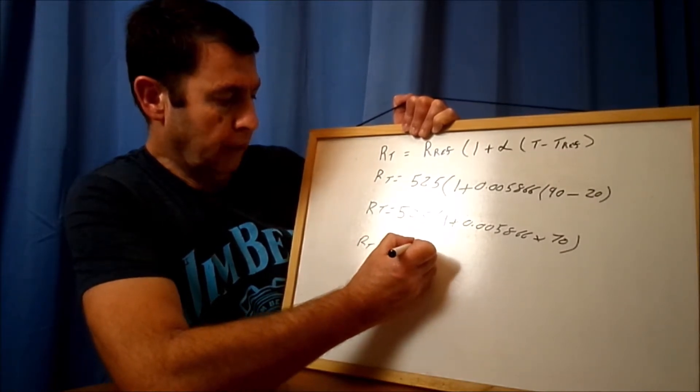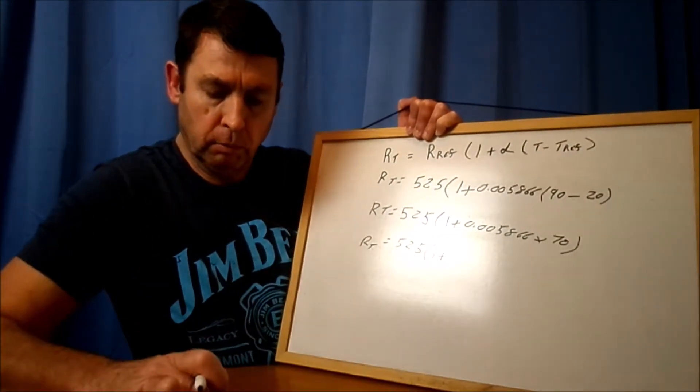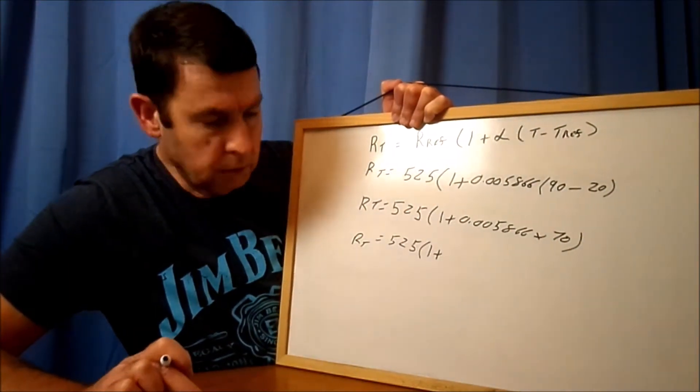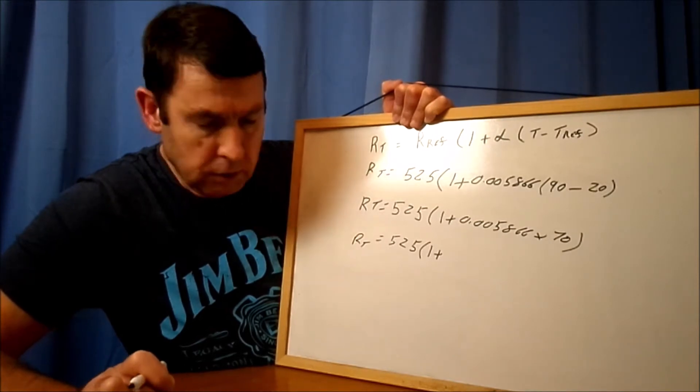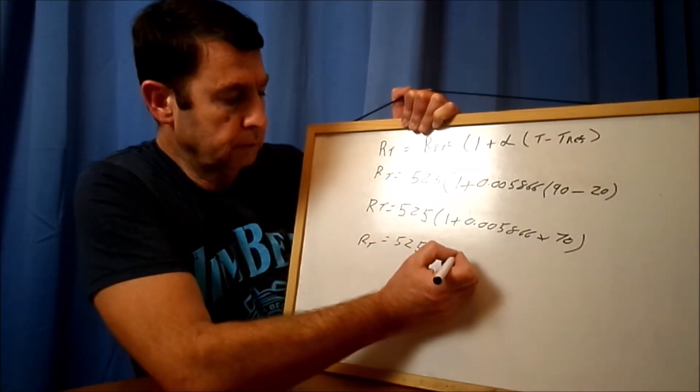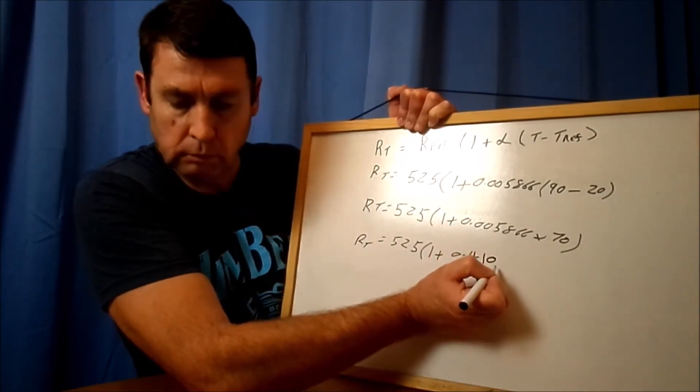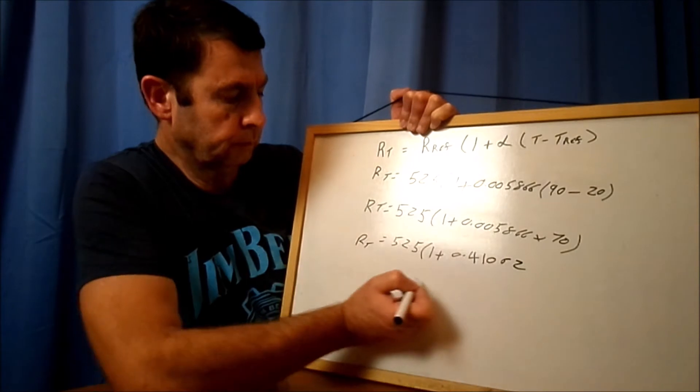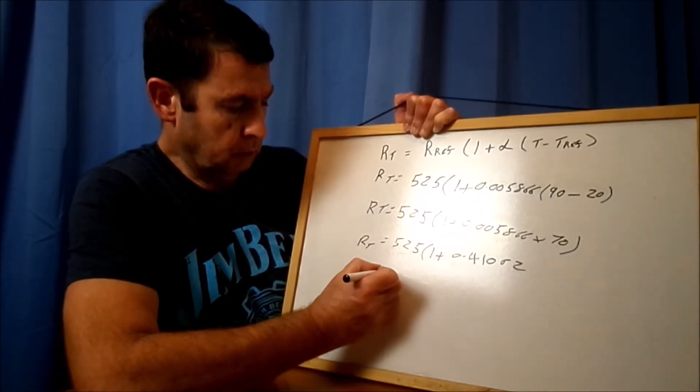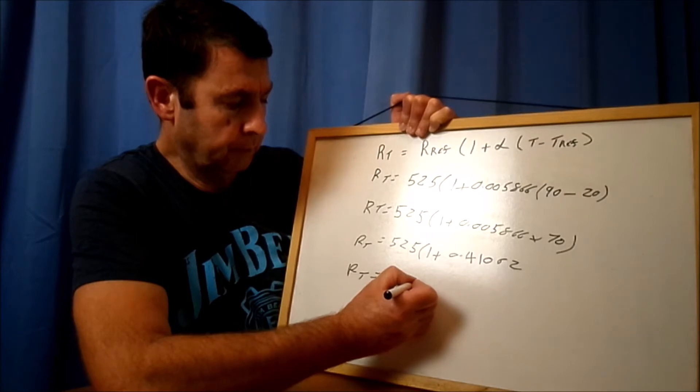Times 1 plus 0.005866, and that'll be times - 90 minus 20 is 70. So let's do that first. RT is going to be 525 times 1 plus, and then we'll do that math, which is going to be 0.005866 times 70, which equals 0.41062.